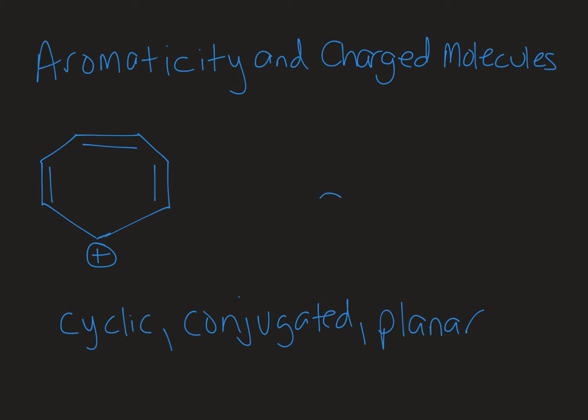So if we think about what a carbocation is, it's a carbon that has three bonds and no lone pairs of electrons, so it's positively charged, and it has on it an empty p orbital. So that carbocation is completing the conjugation around that cyclic system.